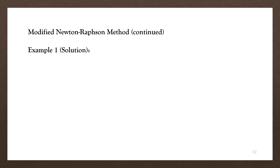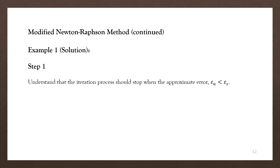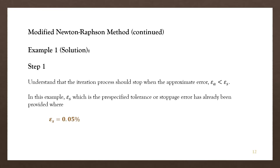Step one: understand that the iteration process should stop when the approximate error epsilon-a is less than epsilon-s, where epsilon-a is the approximate error percentage and epsilon-s is the stoppage error or pre-specified tolerance percentage. In this example, the stoppage error has been specified as 0.05 percent, which makes things easier to solve.